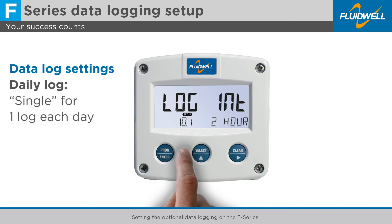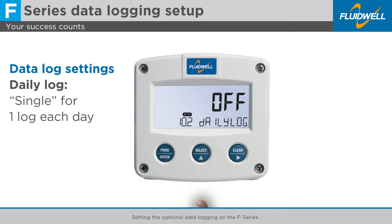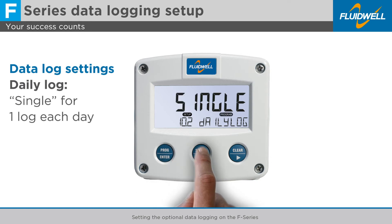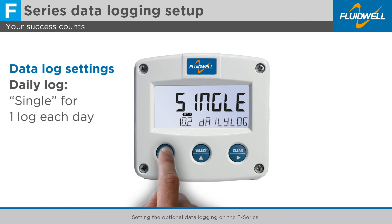Press Select to go to Menu 10.2, Daily Log, to select a single or dual daily log. This setting selects how many times per day a daily record is created. Press Prog to change this setting. Press Select to change the setting to single for one log each day. Press Prog to store this setting.